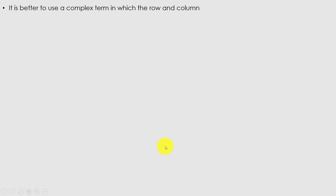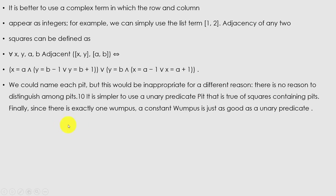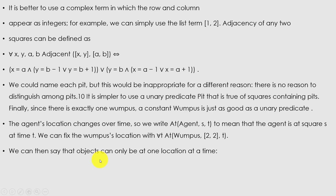We could name each square Square(1,2) and so on, but then adjacency would require an extra fact for each pair of squares. It is better to use a complex term where the row and column are expressed as integers, and adjacency of any two adjacent squares can be defined as a general rule. Rather than naming each pit individually, it is simpler to use a unary predicate Pit that is true of squares containing pits. Since there is exactly one wumpus, a constant Wumpus is just as good as a unary predicate. The agent's location changes over time, so we write At(Agent, s, t) to mean the agent is at square s at time t.